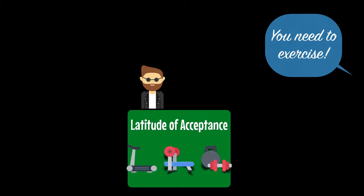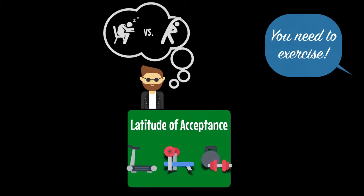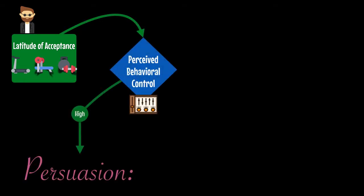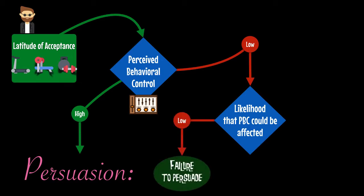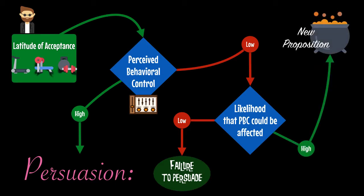When a recipient assesses the position advocated in a message as compatible with the positions in his latitude of acceptance, change will occur as a consequence of trying to reduce the dissonance resulting from the discrepancy between his current intention and that advocated by the message, by doing a self-assessment of his ability to change. Thus, when confronted with an invitation to exercise more, a man who already believes in the benefits of exercise will change his intention if his perceived behavioral control or self-efficacy is high — say, if he has the time and he can afford a gym membership. However, if his perceived behavioral control is low, perhaps because he thinks he cannot afford a gym membership, persuasion will depend on the likelihood that a new proposition could increase his perceived behavioral control. When nothing will do, maybe because the closest gym is in another town, persuasion won't occur.